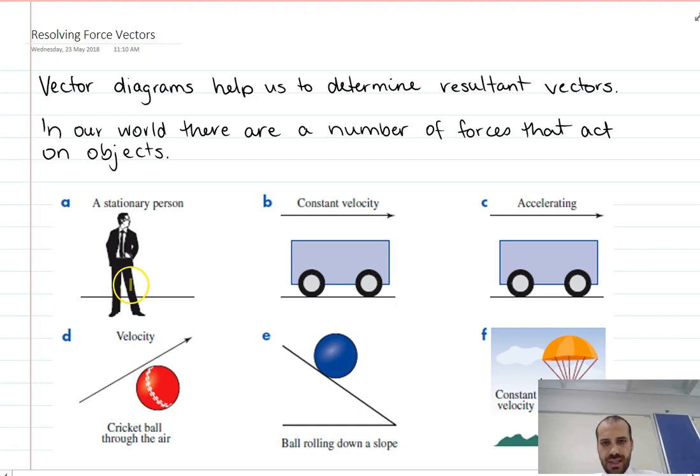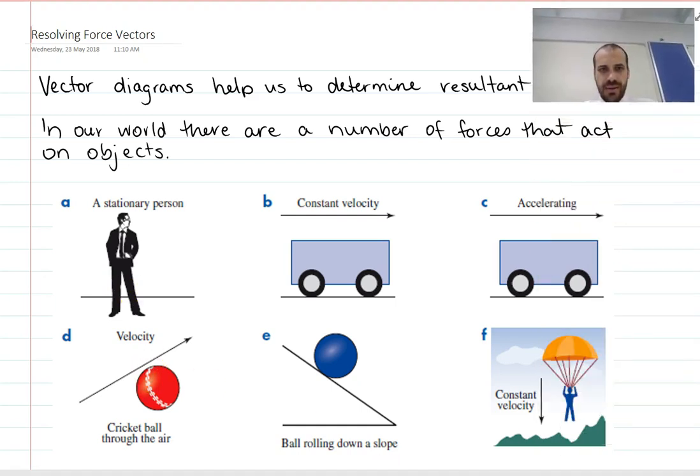All right, so I'm going to do these six examples. A stationary person, so a person just standing there, a car that is traveling at a constant speed, a car that is speeding up, a cricket ball that is flying through the air, a ball rolling down a slope, and a parachuter going down towards the earth at a constant velocity downwards. So he's not speeding up or slowing down on the way down. He's kind of like our car, but he's traveling downwards here.